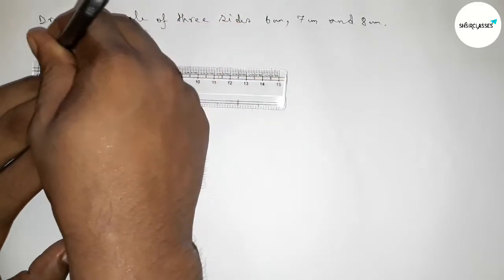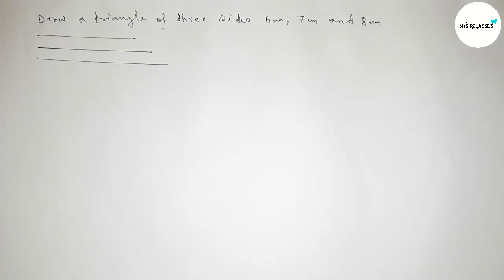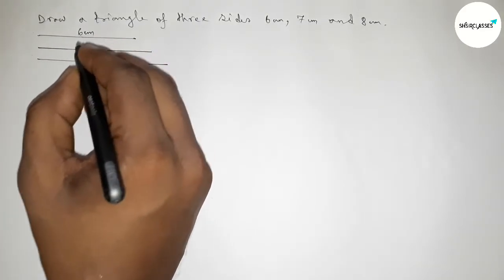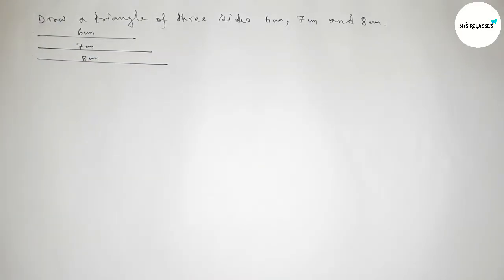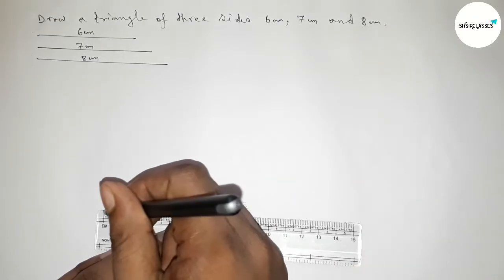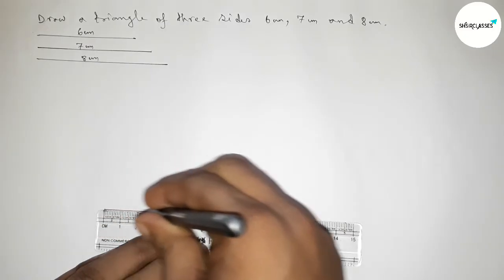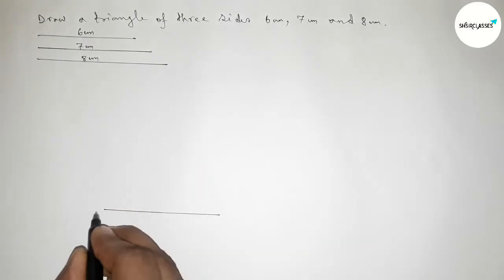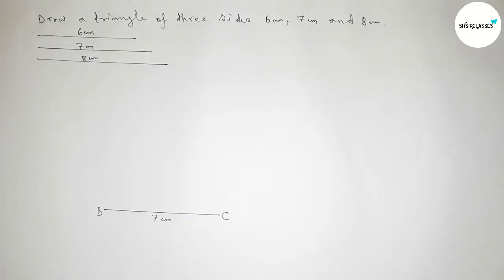So this one is 6 centimeter, this one is 7 centimeter, and this one is 8 centimeter. Now first we have to draw a line of length 7 centimeter. This is the 7 centimeter line, taking point B here and point C here.